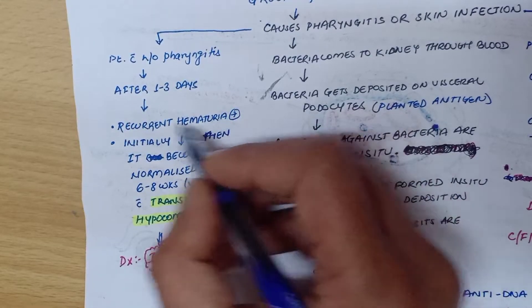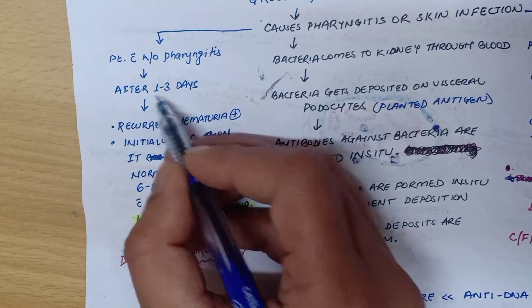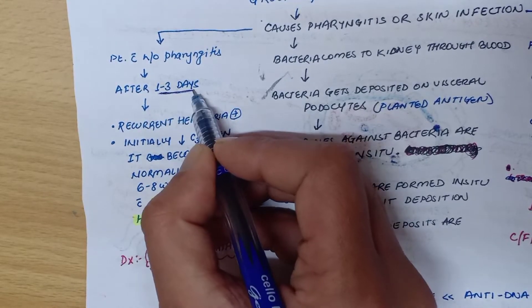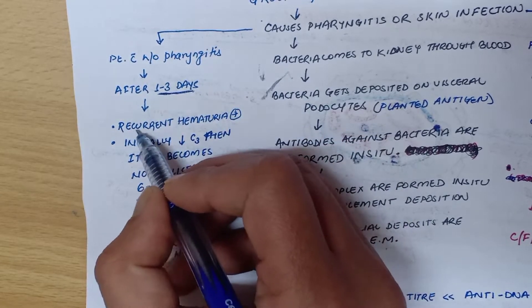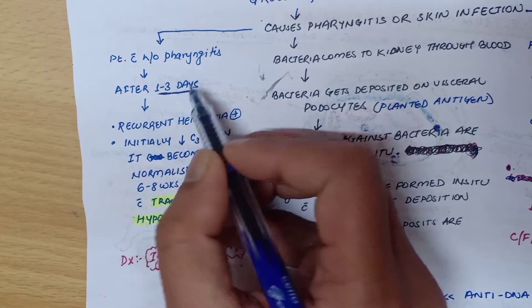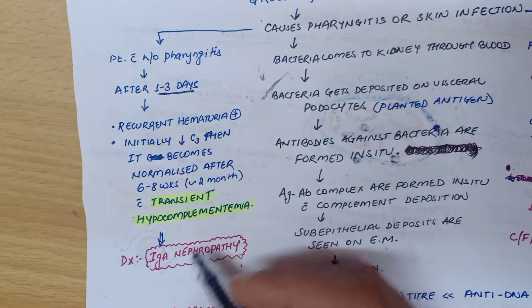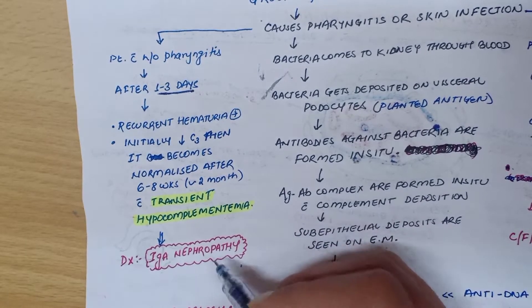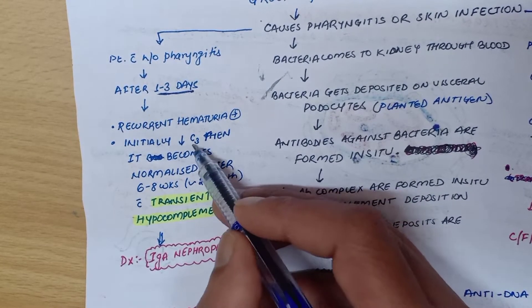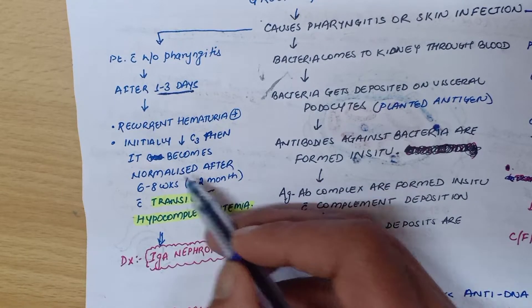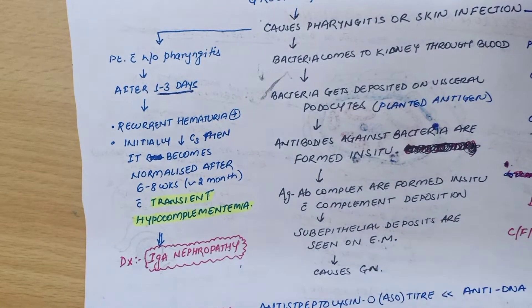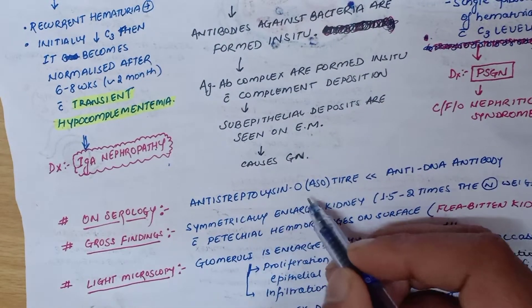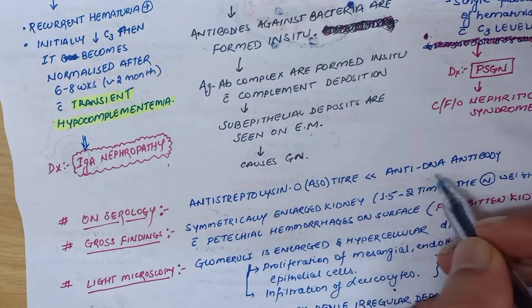If a patient has recurrent hematuria after one to three days of pharyngitis — note it's only one to three days, whereas in PSGN it was one to three weeks — then we can suspect IgA nephropathy. In IgA nephropathy, initially there will be a decrease in C3 level and then it will become normalized after six to eight weeks, that is after two months. On serology we can do antistreptolysin O, that is ASO titer, and anti-DNA antibody test.